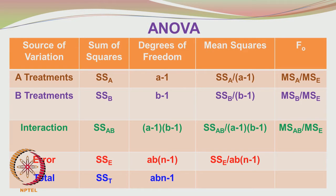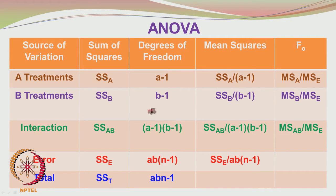In the typical analysis of variance table for factorial design, the sources of variability include factor A treatments, factor B treatments, and the interaction between A and B, plus contribution from error. You have sum of squares of factor A, factor B, interaction AB, and error. The degrees of freedom are A-1 for factor A, B-1 for factor B, (A-1)(B-1) for the interaction, and AB(N-1) for error. Mean squares are calculated by dividing sum of squares by the respective degrees of freedom.